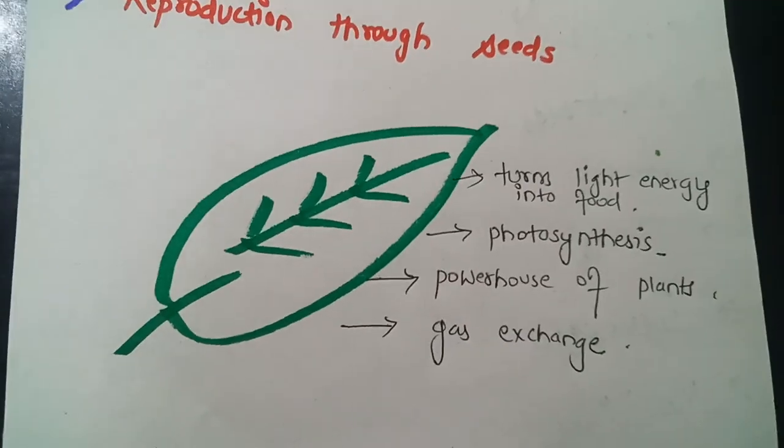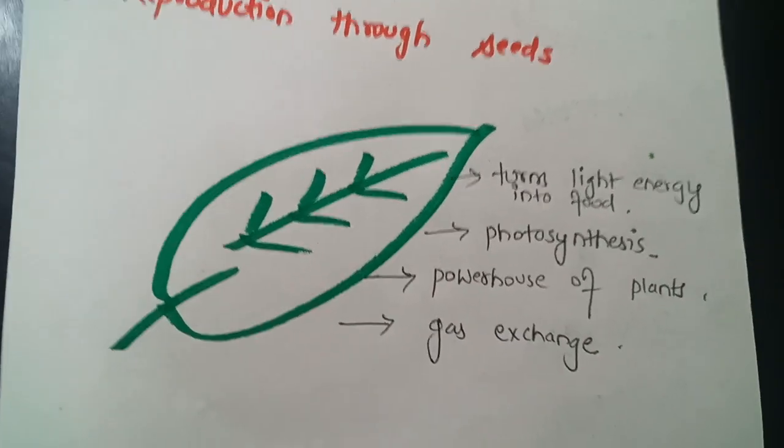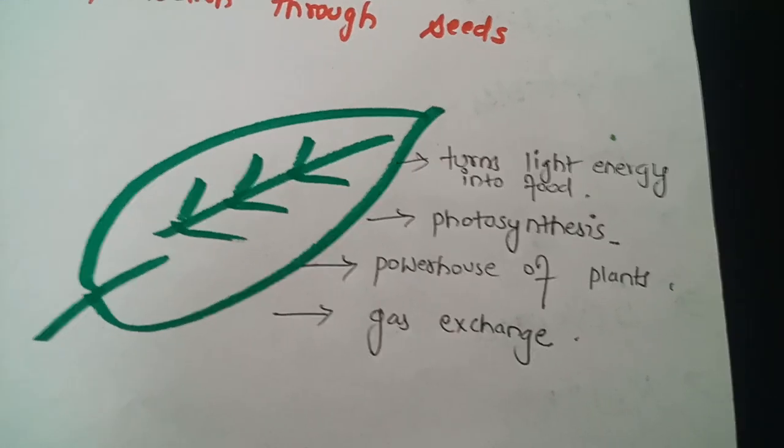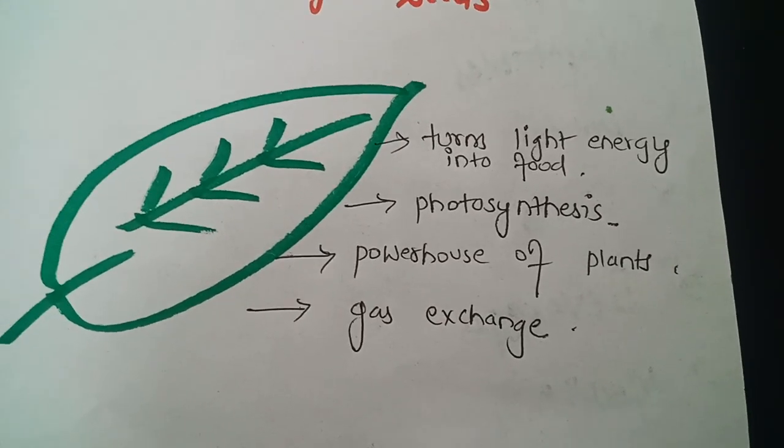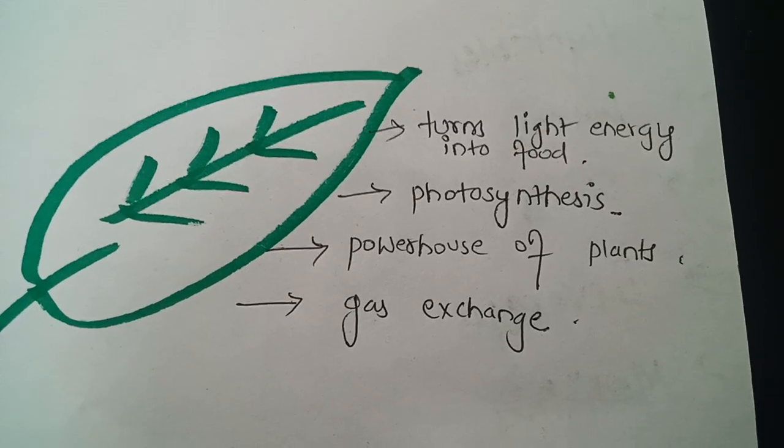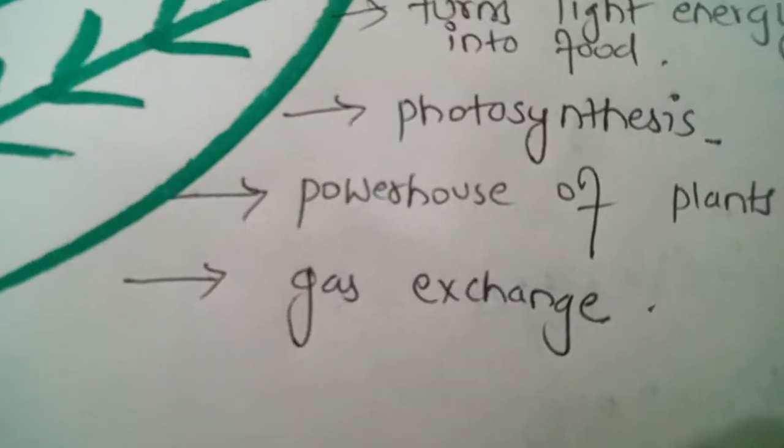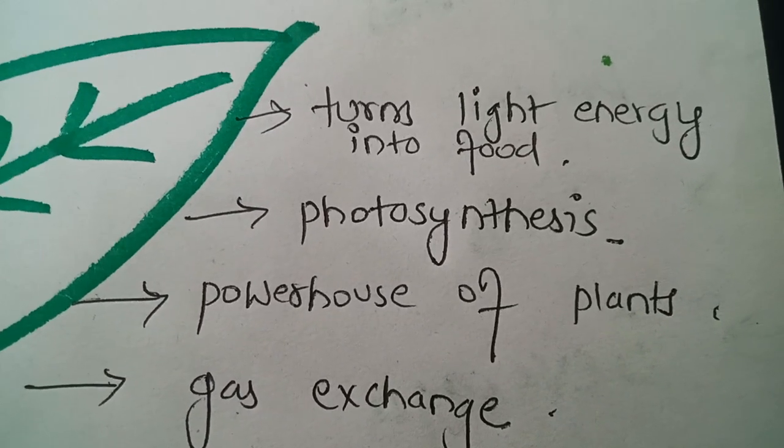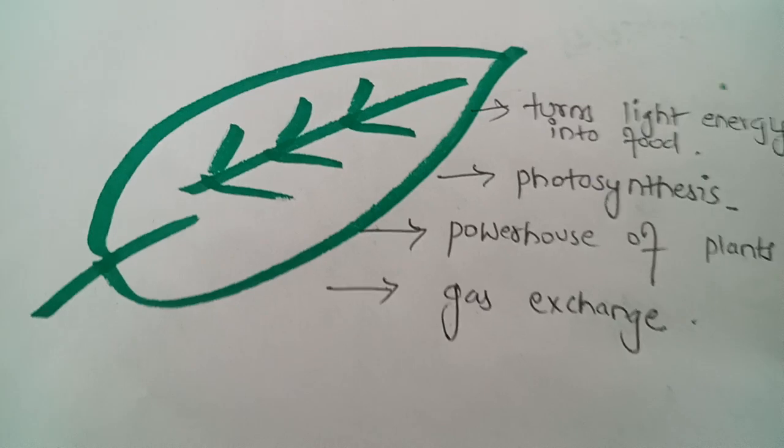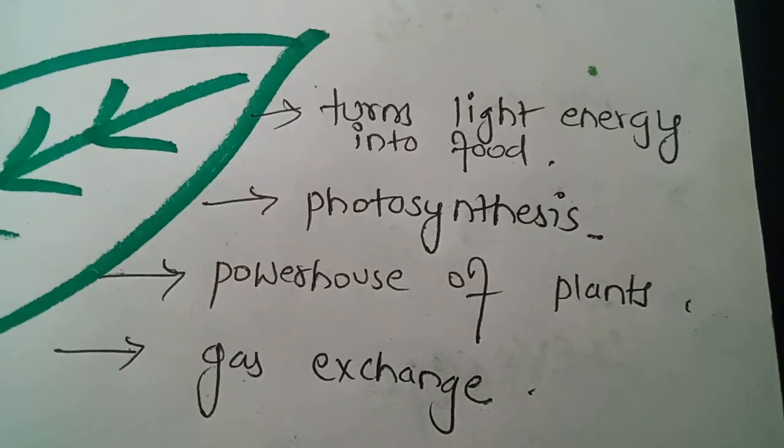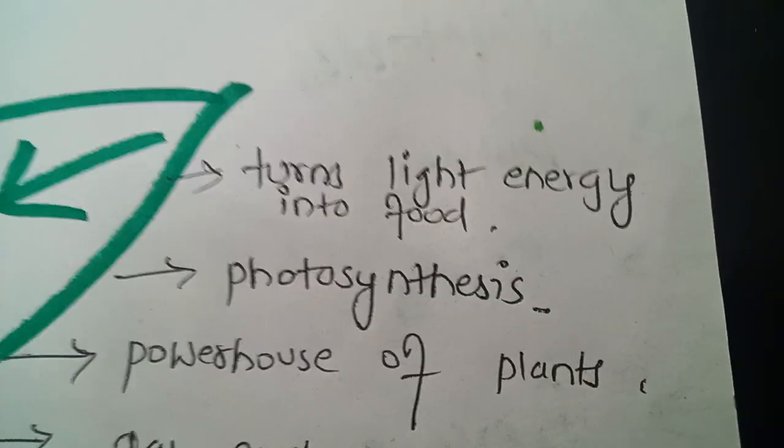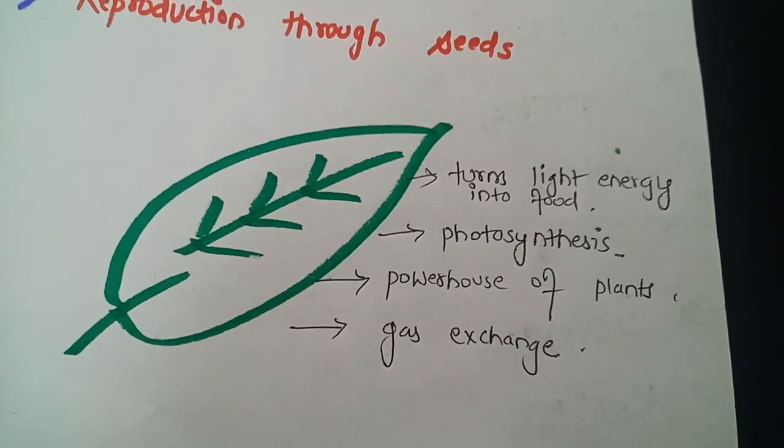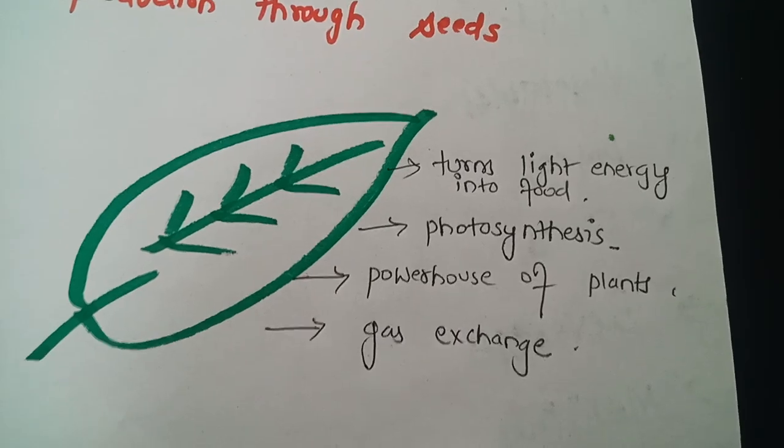Now leaves are really very important in a plant life. As you can see here various functions of a leaf. Leaf is also known as powerhouse of a plant. It helps in exchange of gases. It also helps in photosynthesis process. That means leaves are a major part which helps in making their own food. Leaves also turns light energy into food. So leaves are very essential in plants.